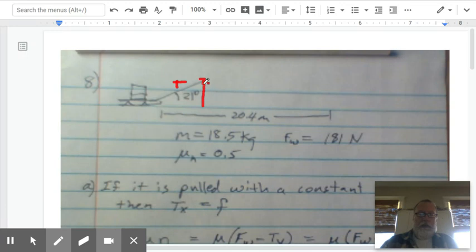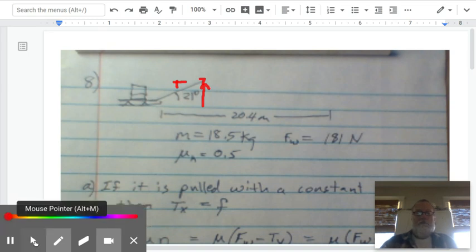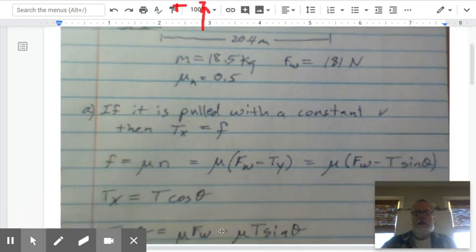That plus the normal force has to equal the weight of the sled. And so then I have this expression right here. The normal force is the weight of the sled minus the horizontal component of the tension. And then the horizontal component is T sine theta. So here's our final equation for friction.